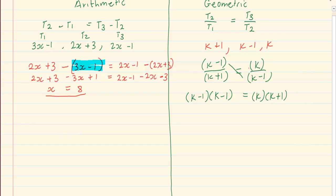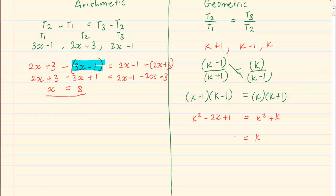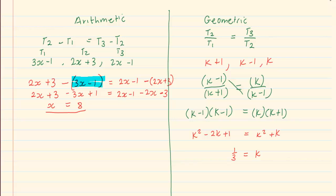Once we cross multiply, we got an equation. We start expanding using the distributive law, which gives us k squared minus 2k plus 1 is equal to k squared plus k. After this, you should be able to solve for k using your grade 11 work, and you would end up with k is equal to one third. If you are not okay with solving at this stage, you need to go back to your grade 11 work and master solving for x.